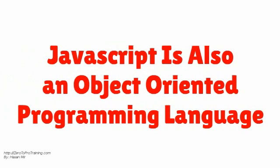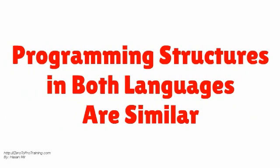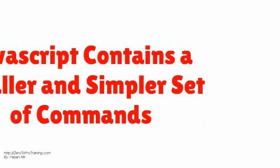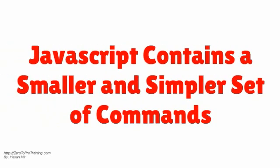JavaScript could be called a distant cousin of Java, as it is also an object oriented programming language. Many of the programming structures in both languages are similar. JavaScript, however, contains a smaller and simpler set of commands as compared to Java.